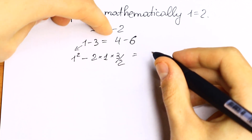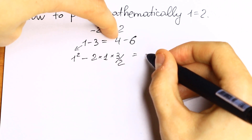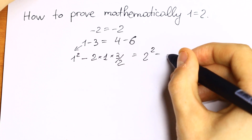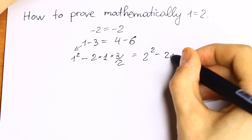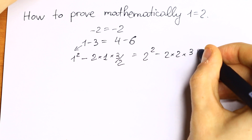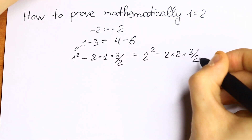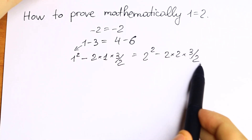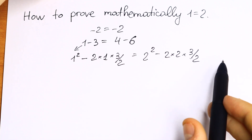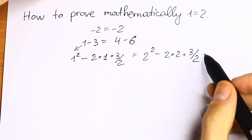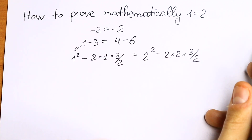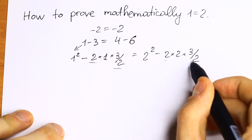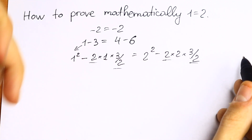On the right we do the same thing. So 4 equals 2 squared, and minus 2 times 2 times 3 halves. If we simplify this, the 2 cancels with this 2 and 2 times 3 equals 6. Nothing changed — we're just multiplying and dividing by 2, right here and right here.